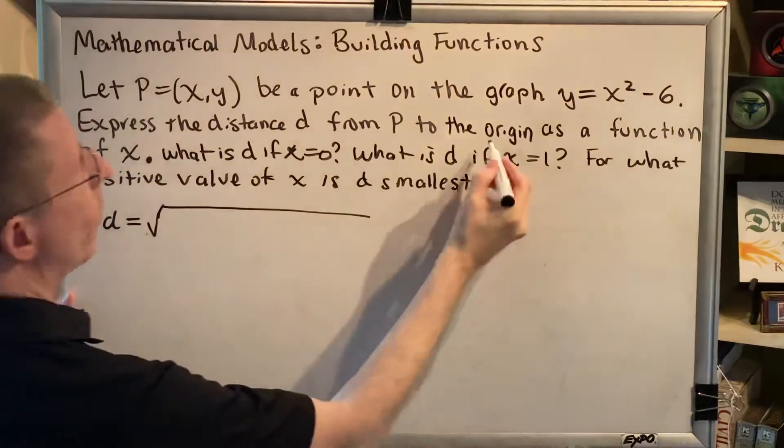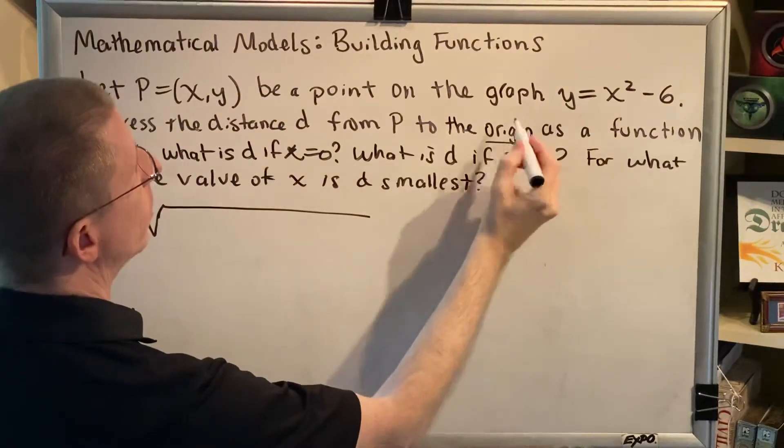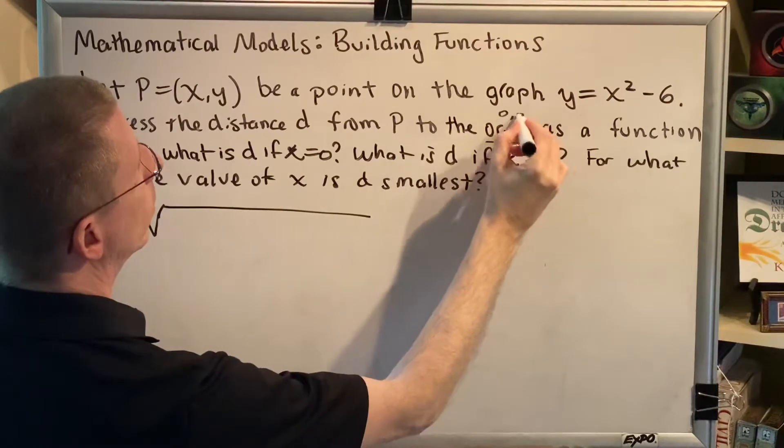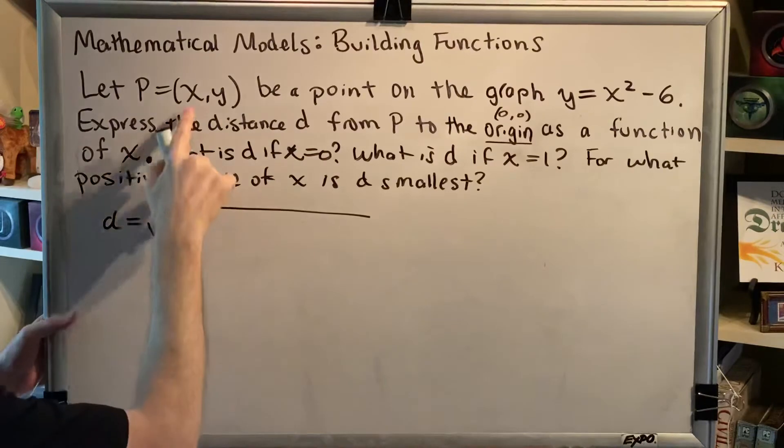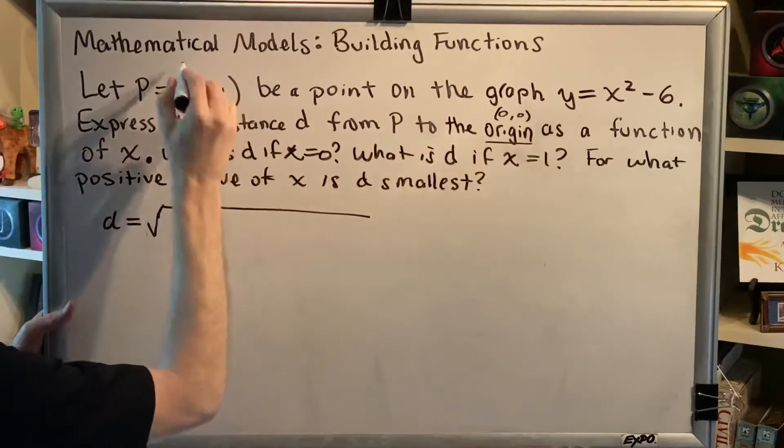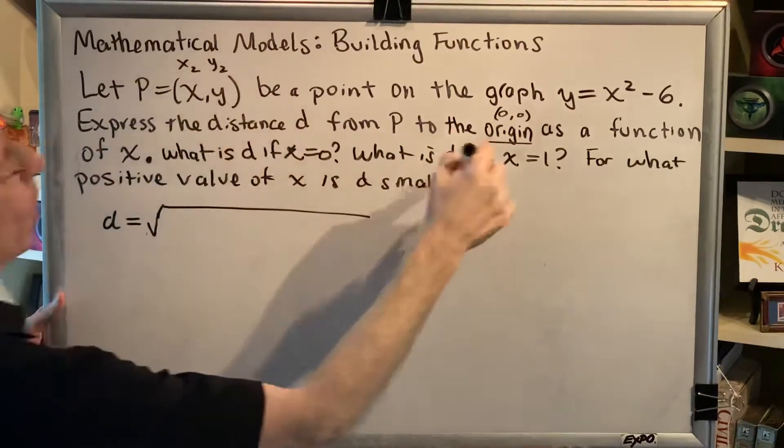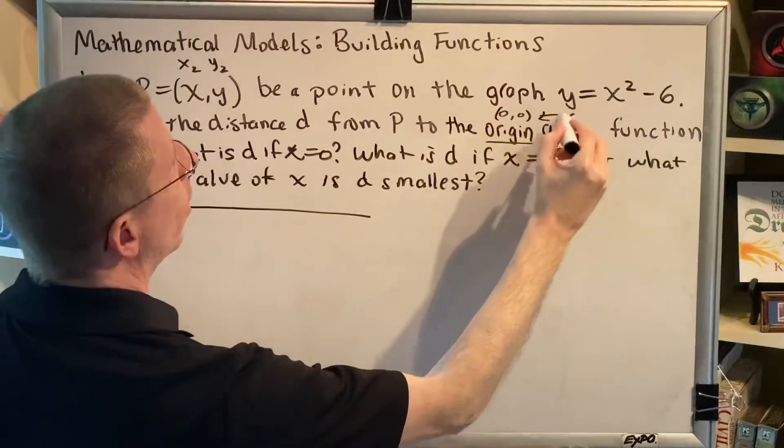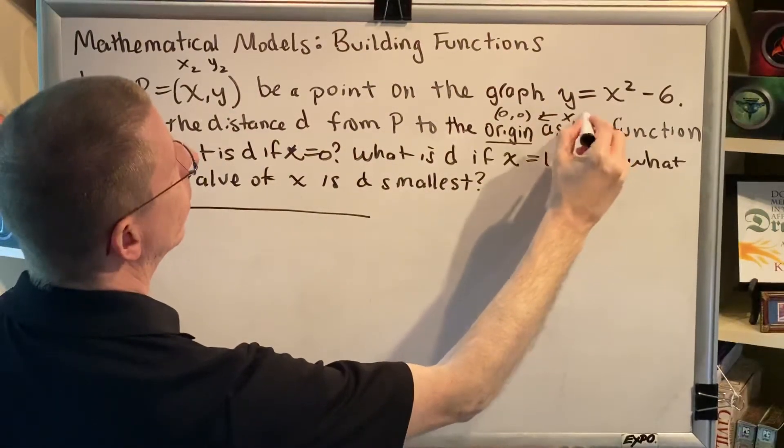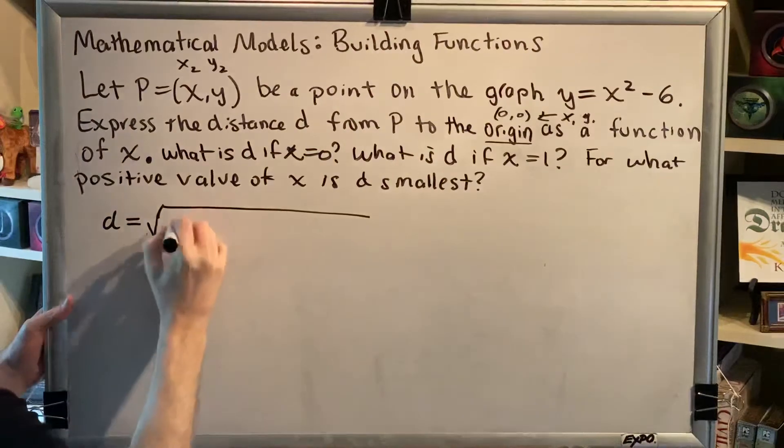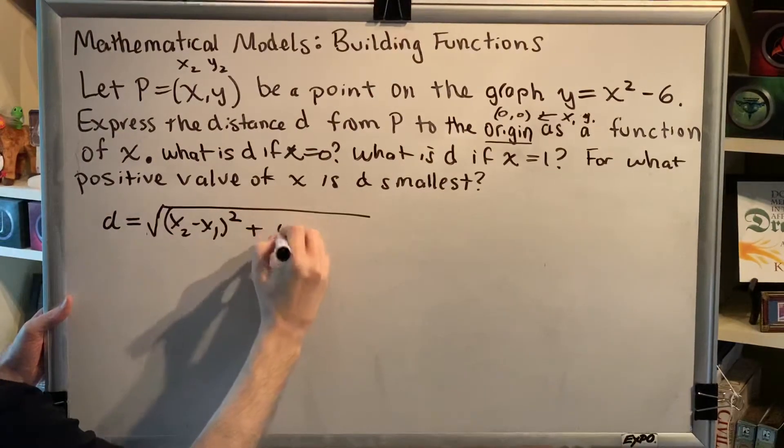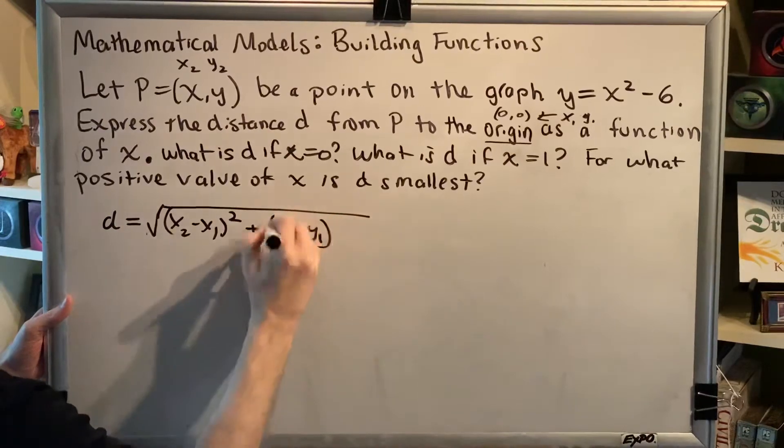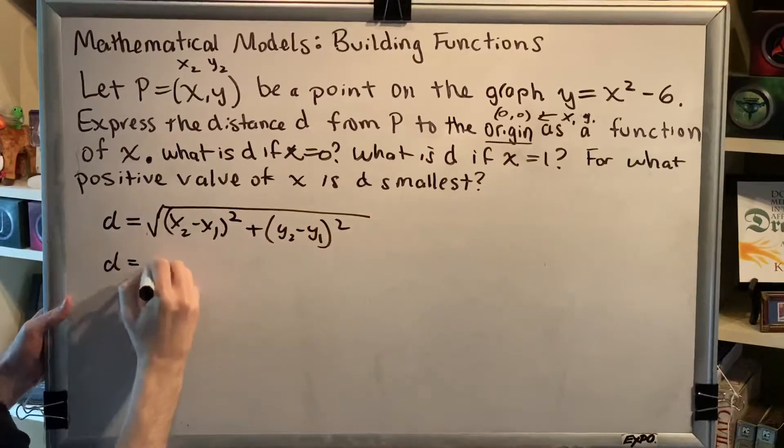It is important to know that the origin is the point (0,0). So these are the points we're plugging in, (x,y) and (0,0). We'll let this be our x₂,y₂, and we'll let this be our x₁,y₁. All right, so distance formula: (x₂-x₁)² + (y₂-y₁)². Plugging in.